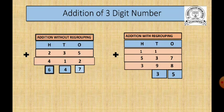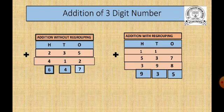Now in the hundreds place we are having the digits 1, 5, and 3. We have to add these three digits. 1 plus 5 is 6, and 6 plus 3 is equal to 9. So our answer is 935. This is the method you learned in the third standard.